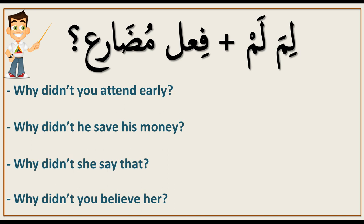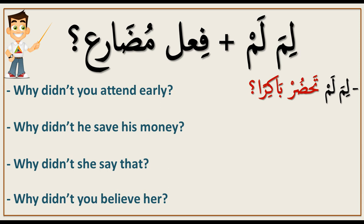Lima lam means 'why didn't,' and after it you add a present tense verb (فعل مضارع). For example: 'Why didn't you attend early?' — Lima lam tachdur baakiran. Tachdur means 'you attend' and baakiran means 'early.' So: Lima lam tachdur baakiran.